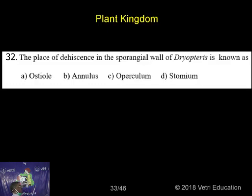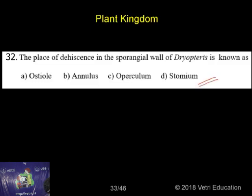The place of dehiscence in the sporangial wall of Dictyopteris is known as — so look here. This is the sporangium. This sporangium has highly thick walls. Those are called annular cells and light wall cells. These are called the stomial cells.